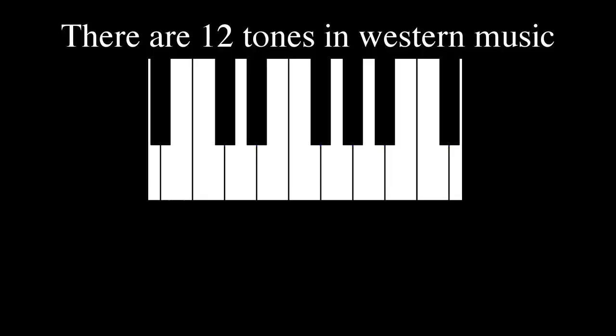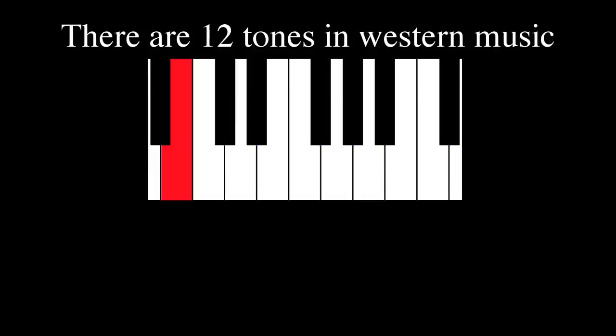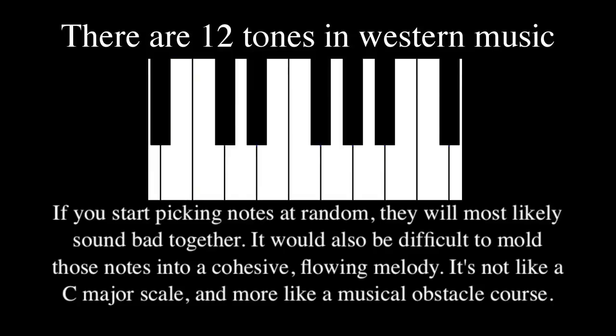There are 12 tones in the Western music system. If you start picking notes at random, they will most likely sound bad together. It will also be difficult to mold those notes into a cohesive, flowing melody. It's not like a C major scale — it's more like a musical obstacle course.